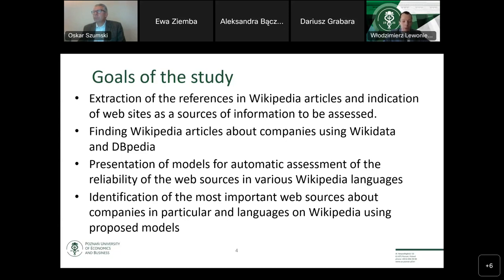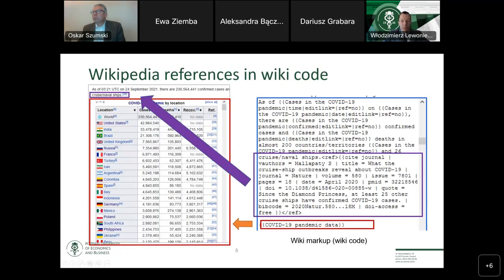This work also focuses on a specific topic: companies. We show how we can find Wikipedia articles on this particular topic. In other research, one could find another group of articles and determine which sources are reliable there, but in this research we focused on companies.